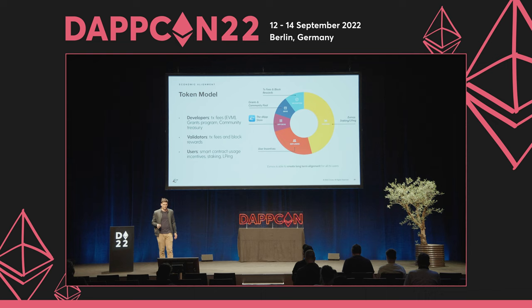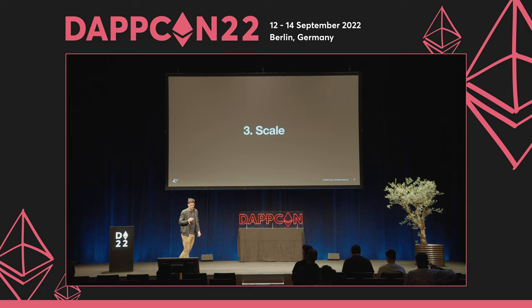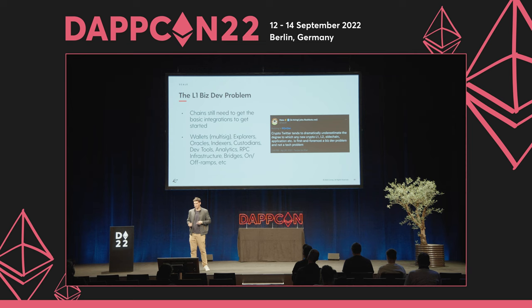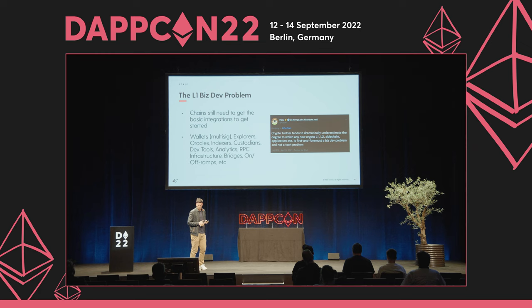The third step of how to scale your applications — after first deploying on Evmos and getting traction — is scaling into your own application-specific chain. Deploying your own chain is mostly a business development effort rather than an engineering effort. You can fork open source code and get started, but if you don't have the basic integrations — oracle providers, indexers, custodians, dev tools, analytics, RPC infrastructure — you won't successfully kickstart your new EVM-compatible chain.